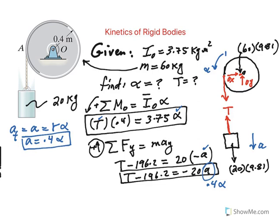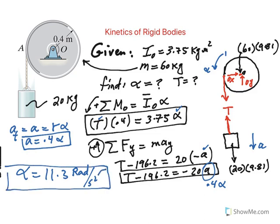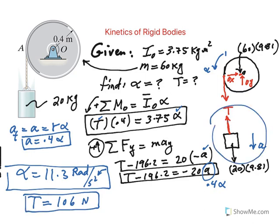So if I go ahead and replace this acceleration by 0.4 alpha and solve for the unknowns, we end up getting an alpha of 11.3 radians per second squared, clearly counterclockwise. And solving for the tension, that comes out to be about 106 newtons, which is totally different than if this guy was in equilibrium and tension would have been just 196.2.